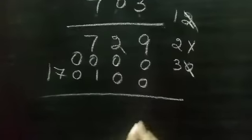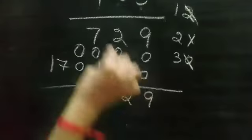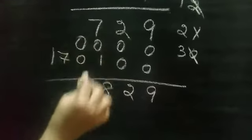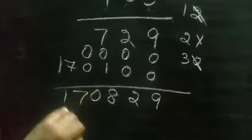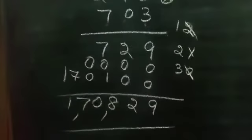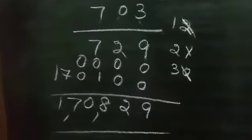So next we just add. So 9, 2, 7 plus 1, 8. 0 plus 0, 0, 7, 1. So answer is 1 lakh 70,829.